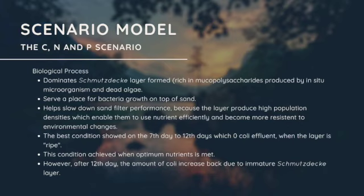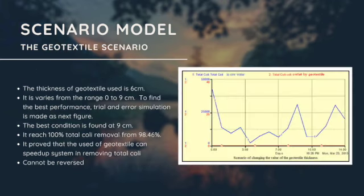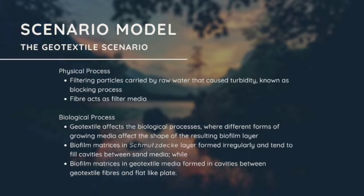The next scenario model is the geotextile scenario. The thickness of geotextile used is basically 6 centimeters and it varies from the range zero to 9 centimeters. To find the best performance, trial and error simulation is made as in the next figure. Finally, the best condition is found at 9 centimeters. It reached 100% total coli removal from 98.46%. It proved that the use of geotextile can speed up the system in removing total coli and this scenario cannot be reversed.